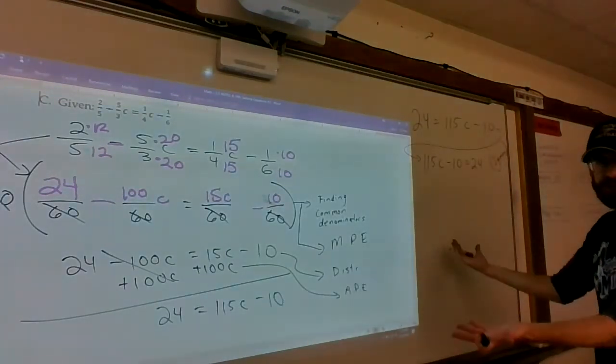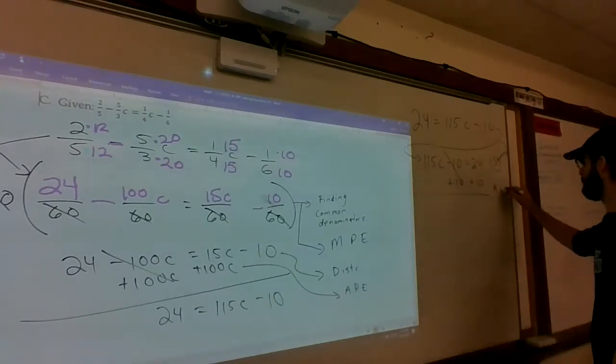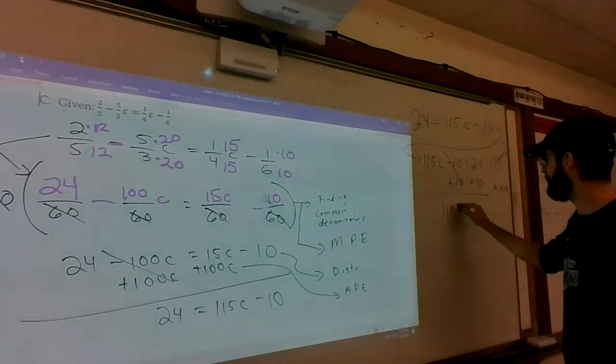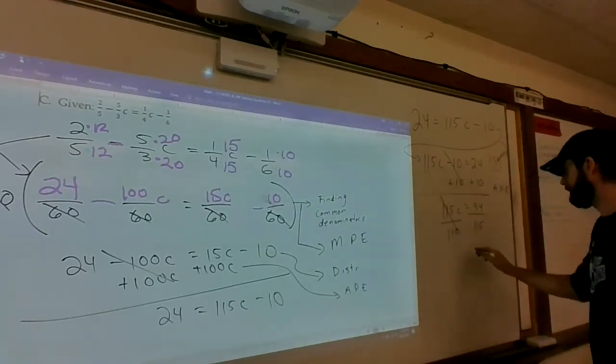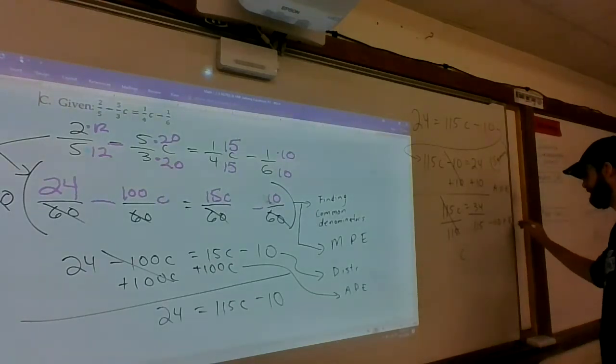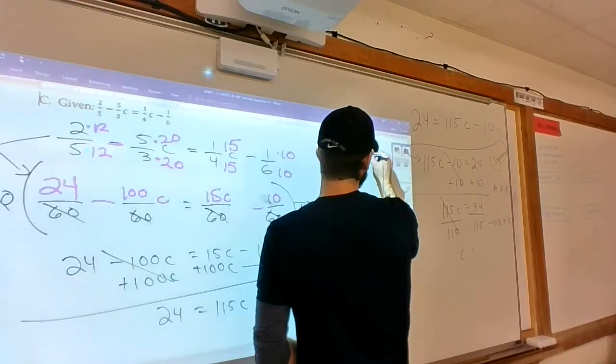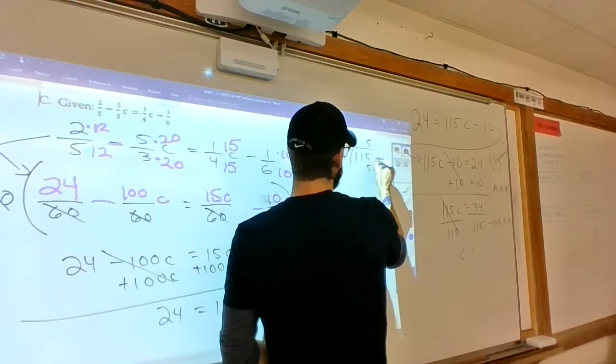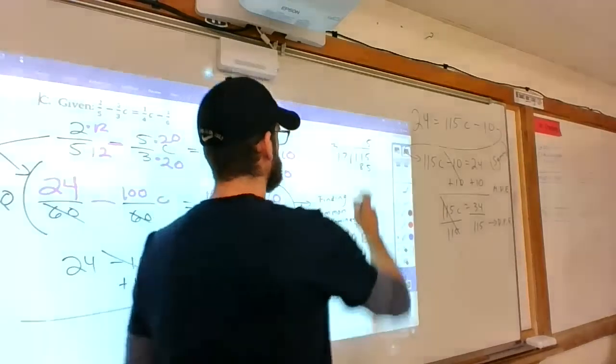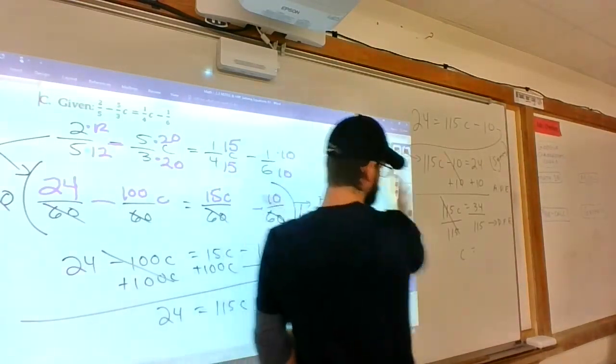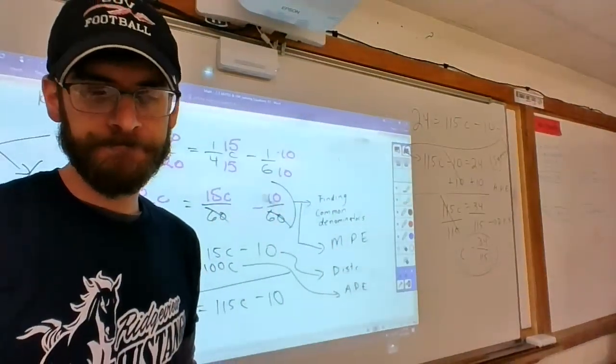Now it looks like section 2.1. Add 10 to both sides. Addition property of equality. 115C is equal to 34. Divide by 115. That's the division property of equality. The only thing I can think of is maybe 115 and 34 share a common factor like 17. And it doesn't appear to do so. So that's our final answer. I'm not looking for the decimal. I'm just looking for the simplified fraction. All right. Thanks.